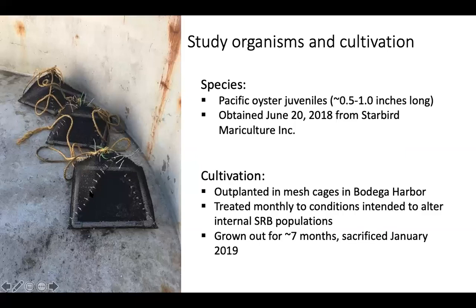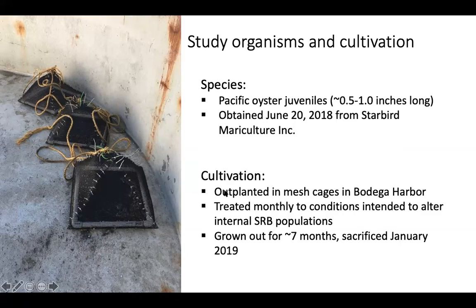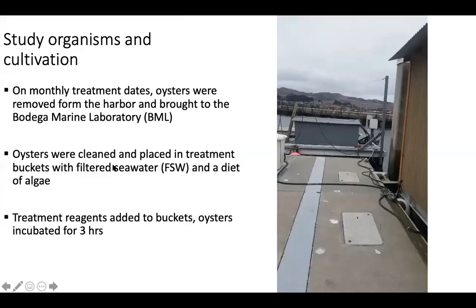I again used the Pacific oyster, obtained from Starbird Mariculture in 2018. I built mesh cages that I tied to the dock next to Chris Starbird's floating commercial upweller system in Bodega Harbor, so they got a lot of food and grew quickly. I treated them monthly — bringing them to the marine lab, cleaning them, putting them in a bucket with filtered seawater and algae, and incubating them for three hours — to conditions intended to alter their internal sulfate reducer populations. I grew them out for about seven months; they were sacrificed in January 2019.